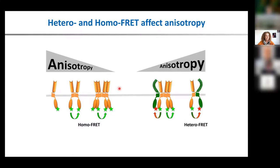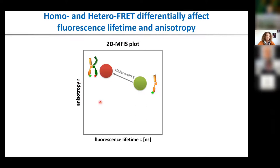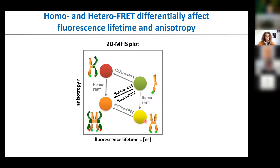If you plot this in a multi-parameter 2D plot — lifetime versus anisotropy — the donor-only control, for example ACR4-GFP, has a certain lifetime and certain anisotropy. If we co-express Clavata 1 mCherry as acceptor, we see a lower fluorescence lifetime and higher anisotropy — a one-on-one heteromeric situation. If homo-FRET is occurring, we have the same fluorescence lifetime but lower anisotropy. Of course you can have both homo- and hetero-FRET at the same time.